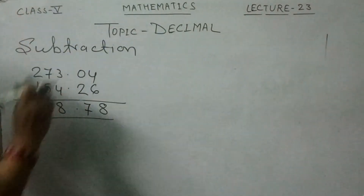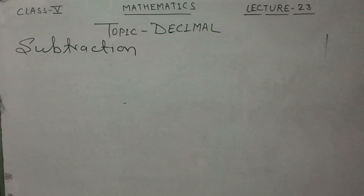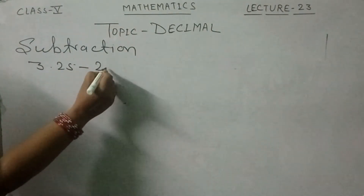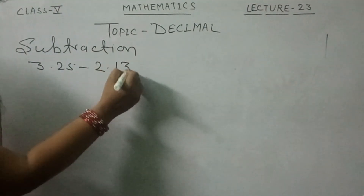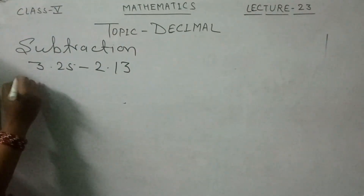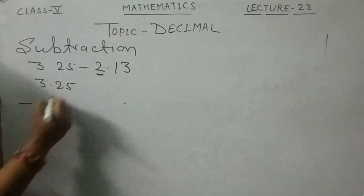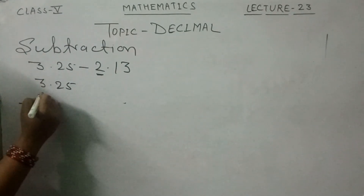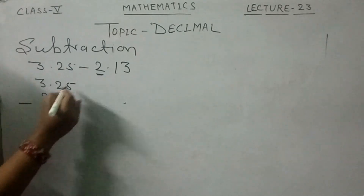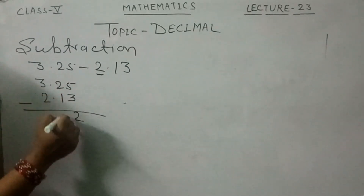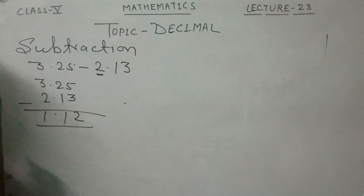Another subtraction example: 3.25 minus 2.13. Write the numbers with decimal points aligned. The ones digit below ones — 3 below 3. Point below point. After the point: 1, 3. Then subtract: 5 minus 3 is 2, 2 minus 1 is 1, 3 minus 2 is 1. The answer is 1.12. Addition and subtraction are done the same way.